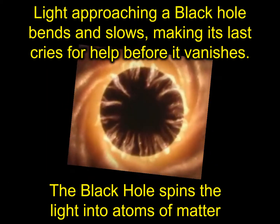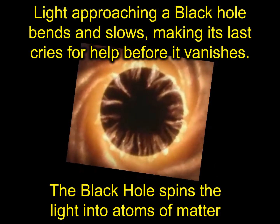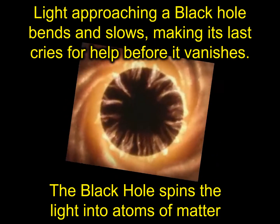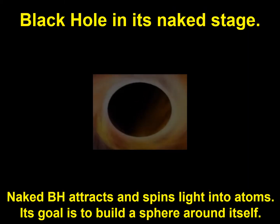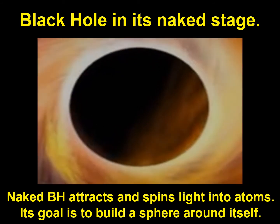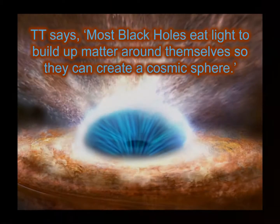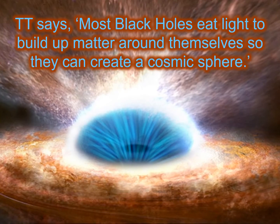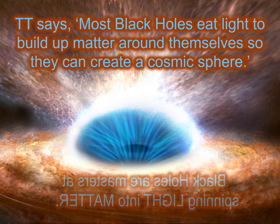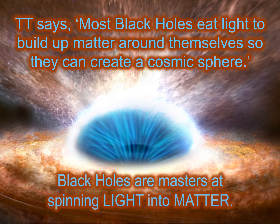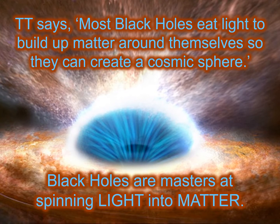Light approaching a black hole bends and slows, making its last cries for help before it vanishes. The black hole spins the light into atoms of matter. We see a black hole in its naked stage — a naked black hole attracts and spins light into atoms, its goal being to build a sphere around itself. Trillion Theory says most black holes eat light to build up matter around themselves so that they can create a cosmic sphere. Black holes are masters at spinning light into matter.